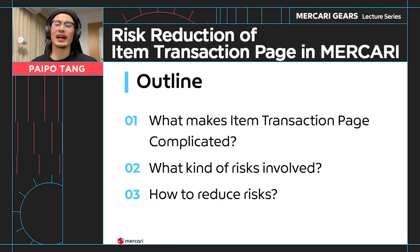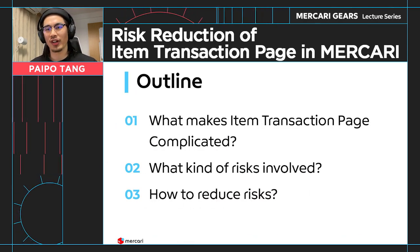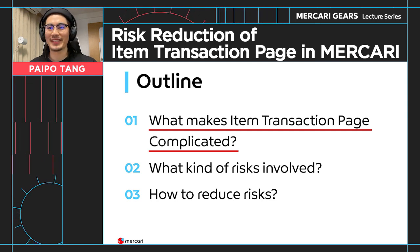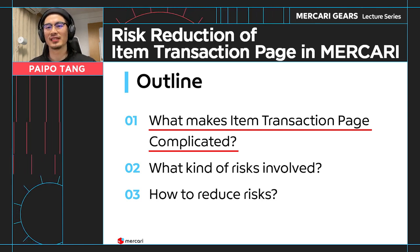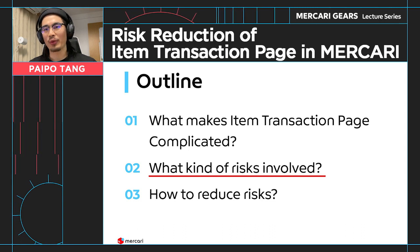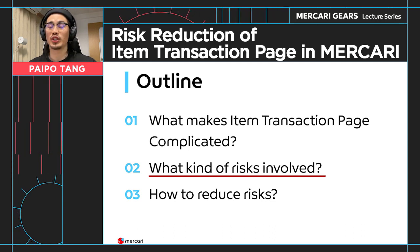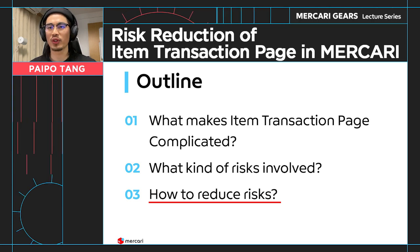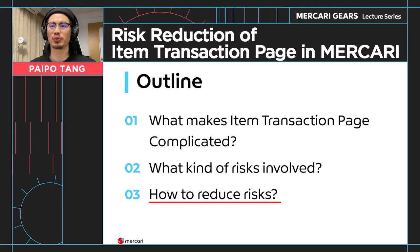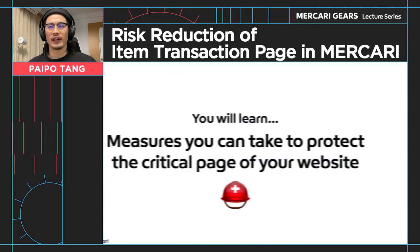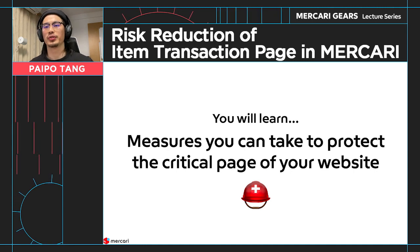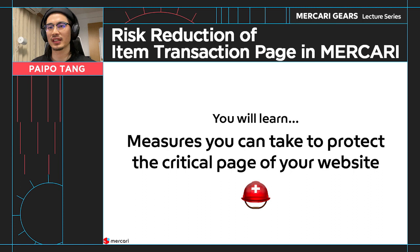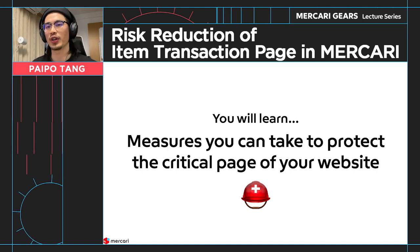Here is the outline of my talk. I'll first talk about what is item transaction page and what makes it complicated. Then I'll bring up what kind of risks are involved in the item transaction page. At the end, I'll share some ways we've adopted to reduce those risks. The purpose of this talk is to give you a brief overview of what kind of measures you can take to protect the critical page of your website.